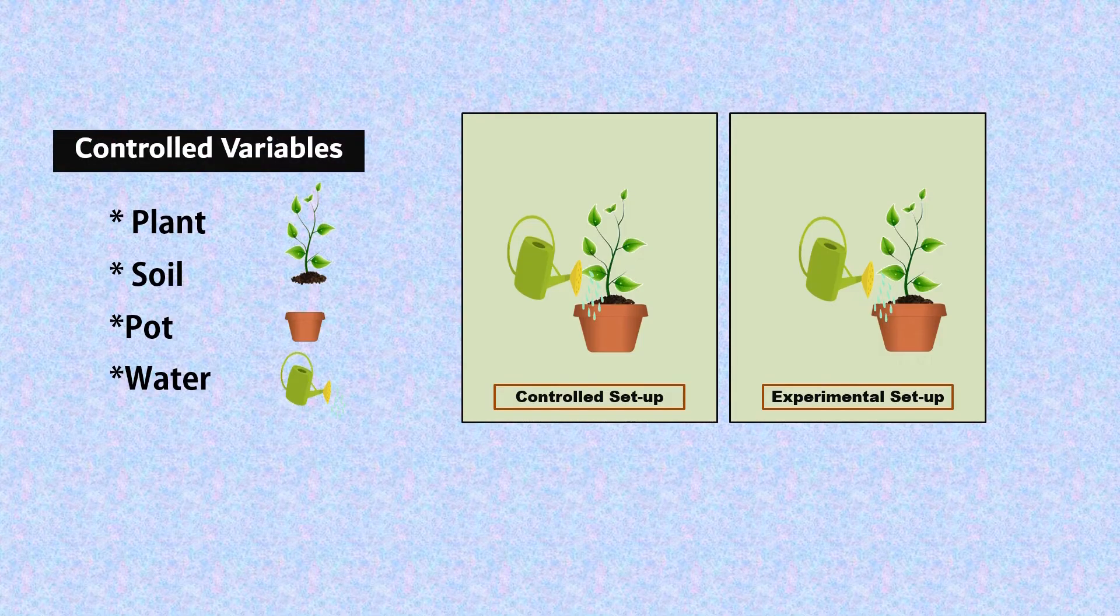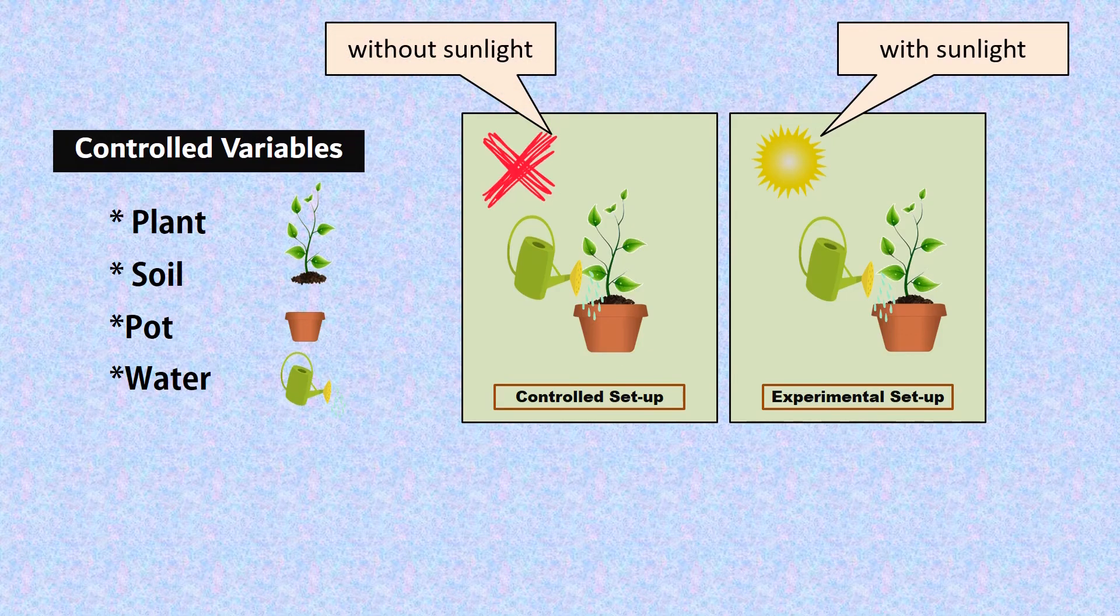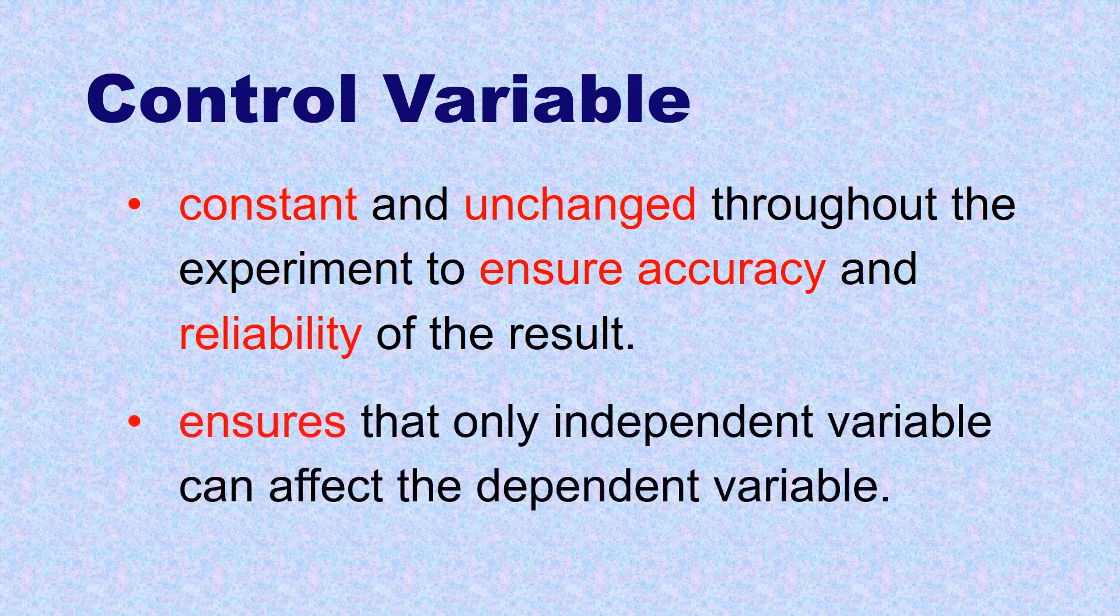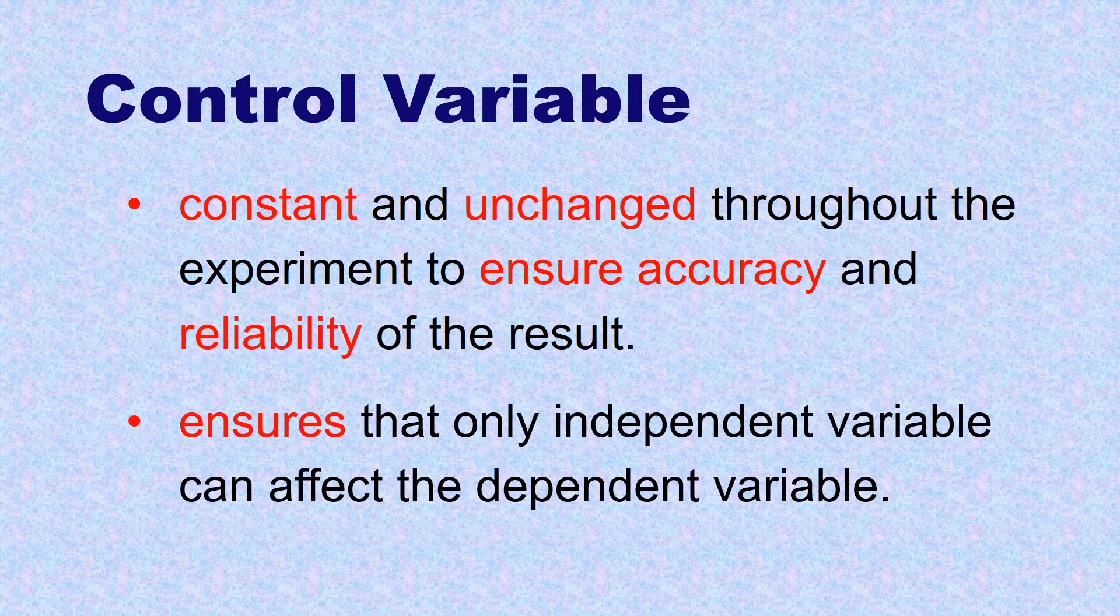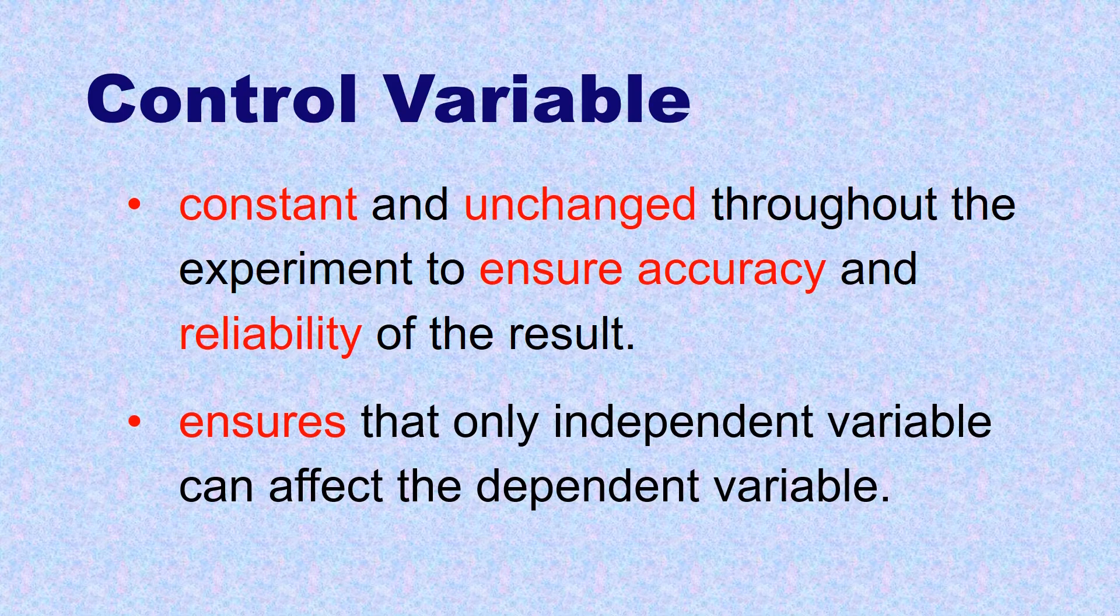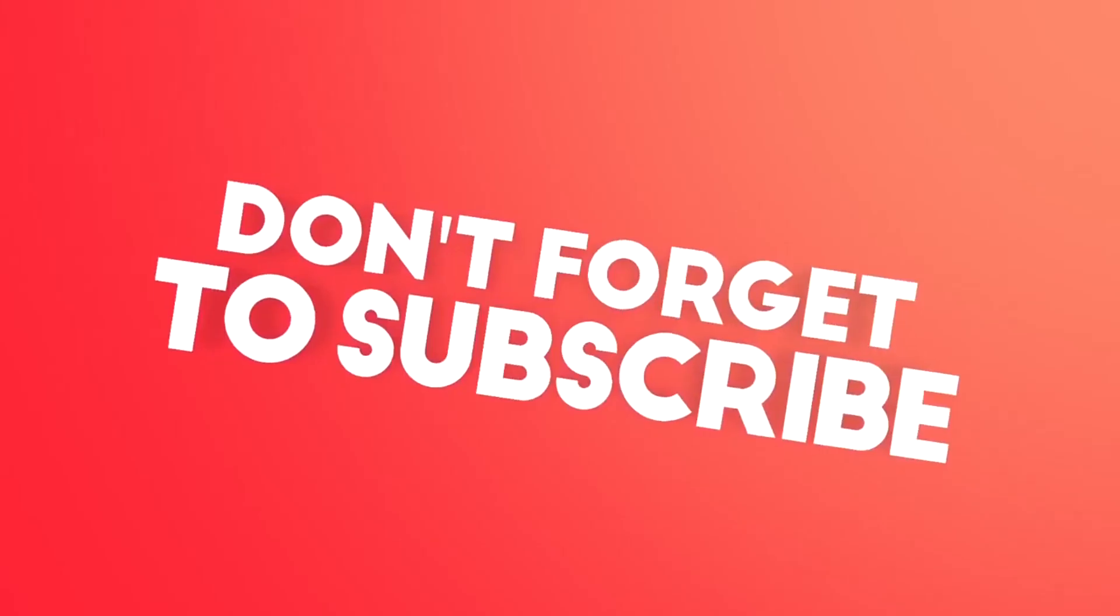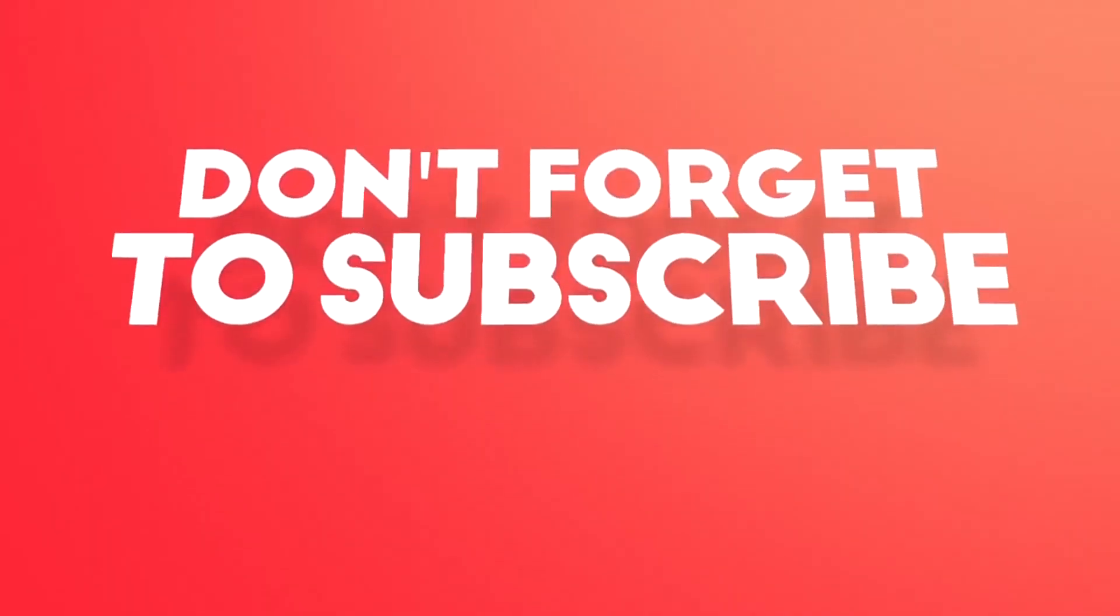They ensure that sunlight is the only variable that can affect plant growth. Thus, controlled variable ensures that only independent variable can affect the dependent variable.